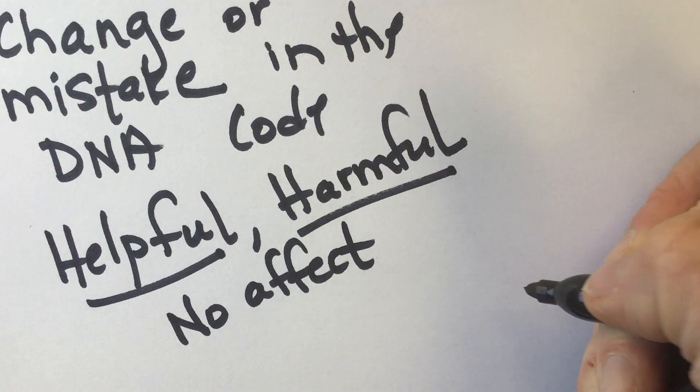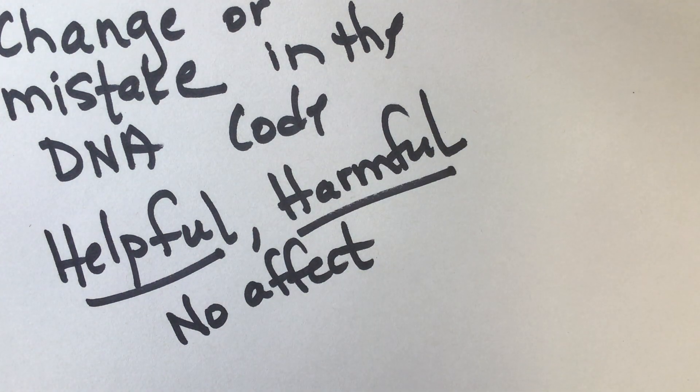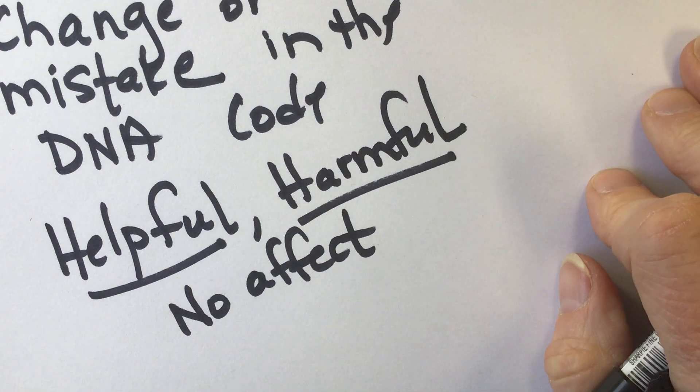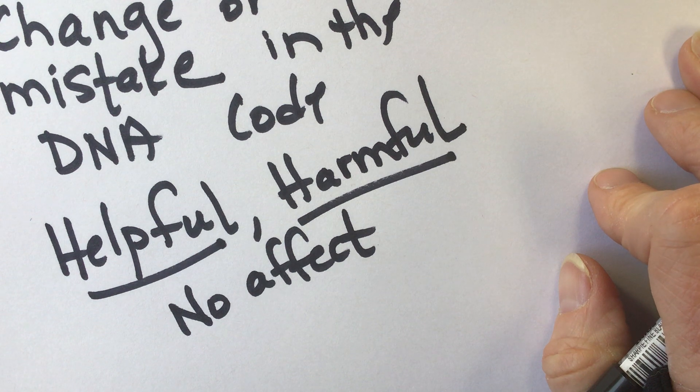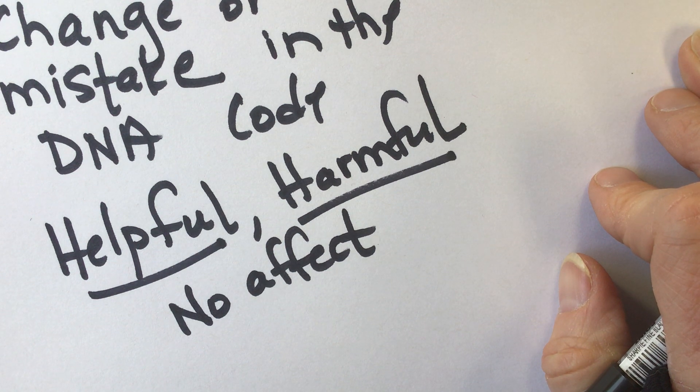So, for example, helpful might be that it helps their coloring, like in an animal, their coloration is a little bit different. And then when they have that different coloration, it's darker, and it helps them to camouflage better.